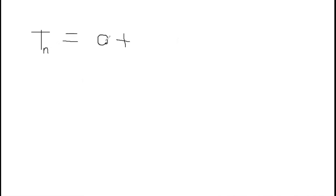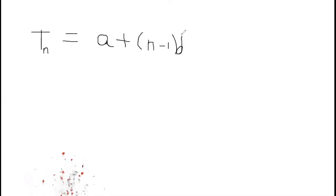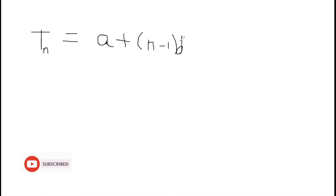Now let us look at the formulas. You have the term formula, which is A plus (N minus 1) times the common difference D. So A is the first term, N is the number of terms, and D is the common difference — what we are going up or down by.